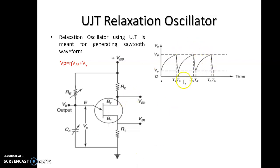This is the output waveform obtained across the capacitor CE. We obtained this waveform due to the charging and discharging of this capacitor. The charging path is from VBB through RE, CE and to the ground. The discharging path is from CE, E, B1 and R1.